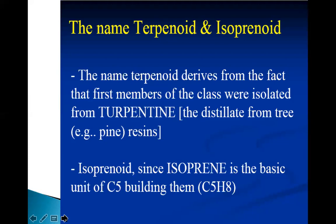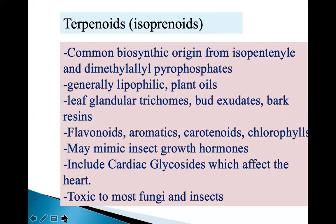Isopreneoids — since Isoprene is the basic C5 building unit, all Terpenoidal compounds have a C5 building block. Terpenoids share a common biosynthetic origin from isopentanyl and dimethylallyl pyrophosphates. Generally they are lipophilic plant oils, but not only plants — other organisms can also produce Terpenoids. In plants, leaf glandular trichomes, bud exudates, and bark resins basically contain Terpenoidal compounds.